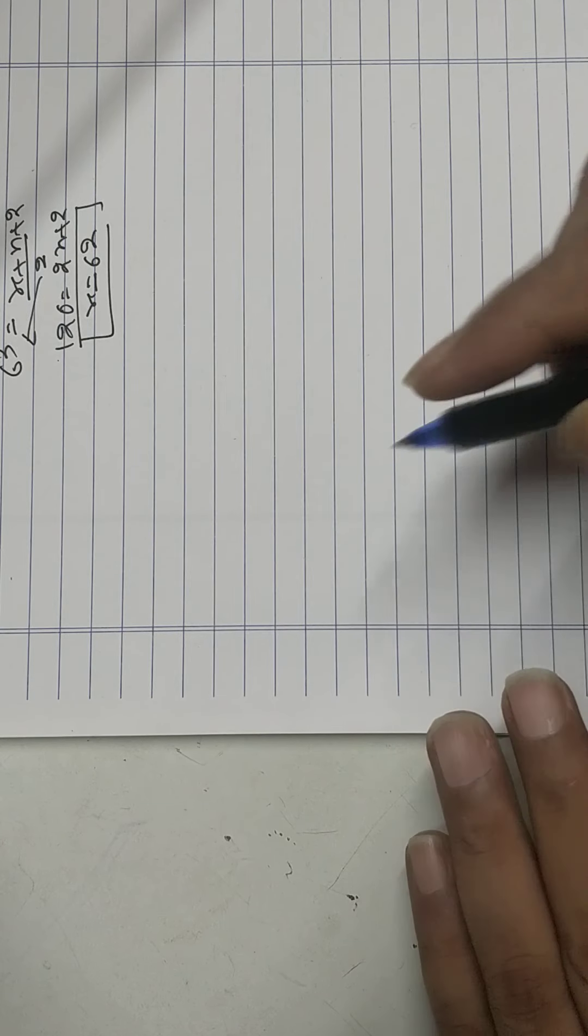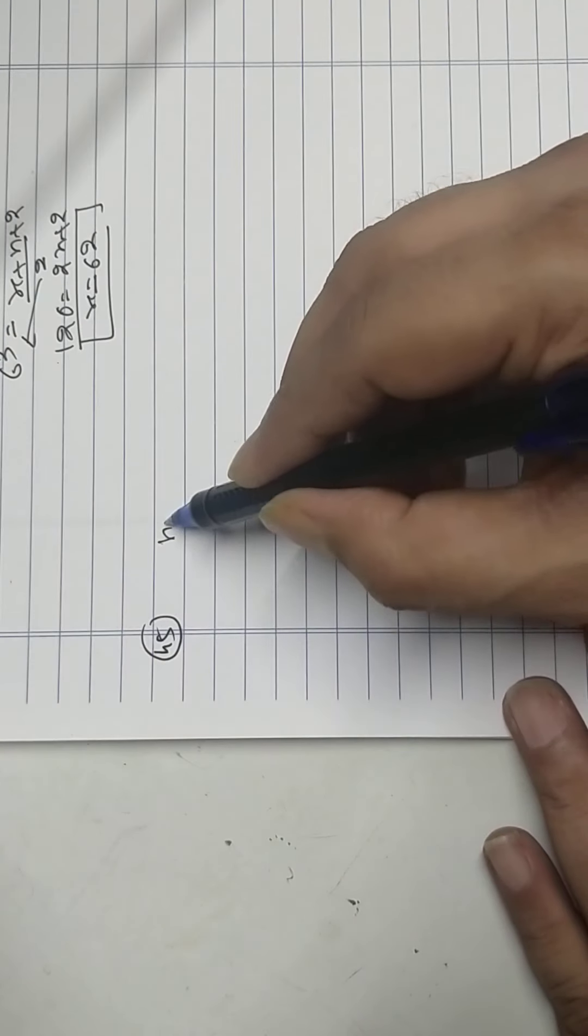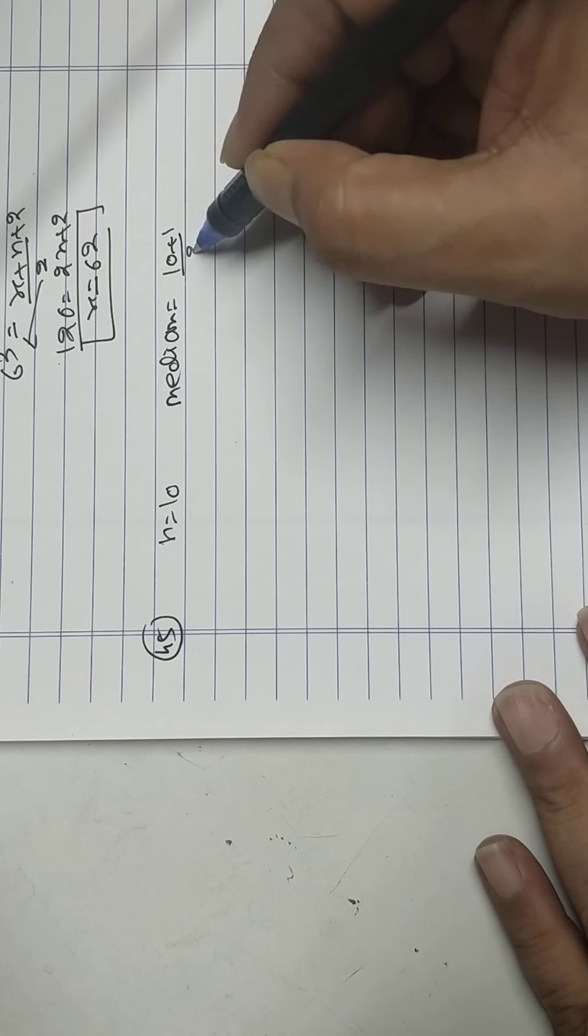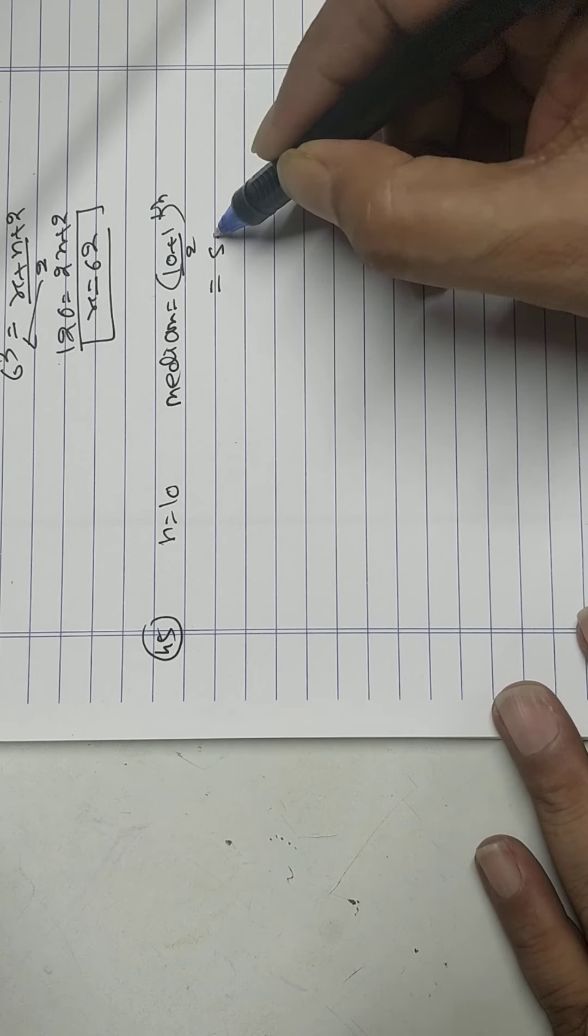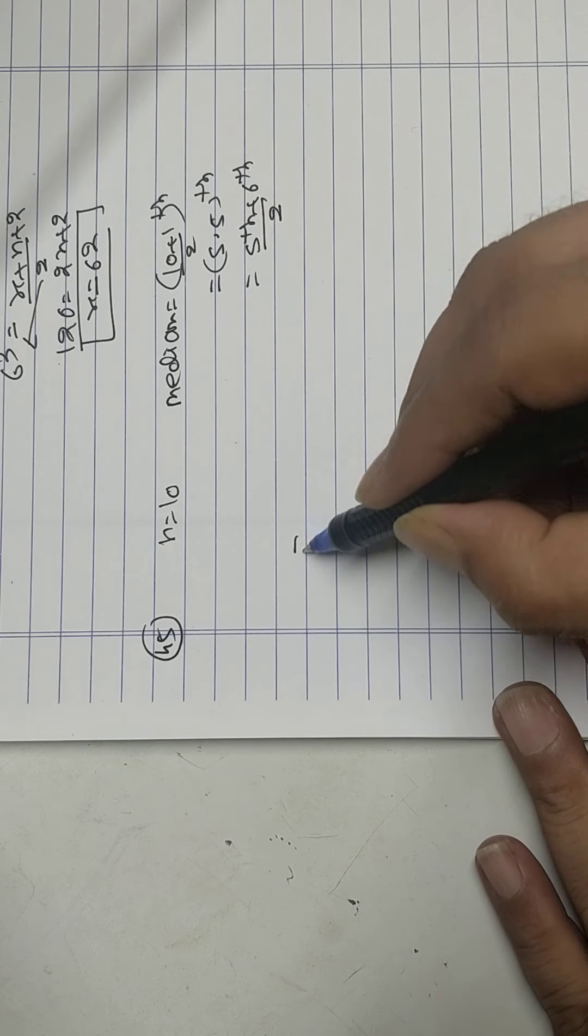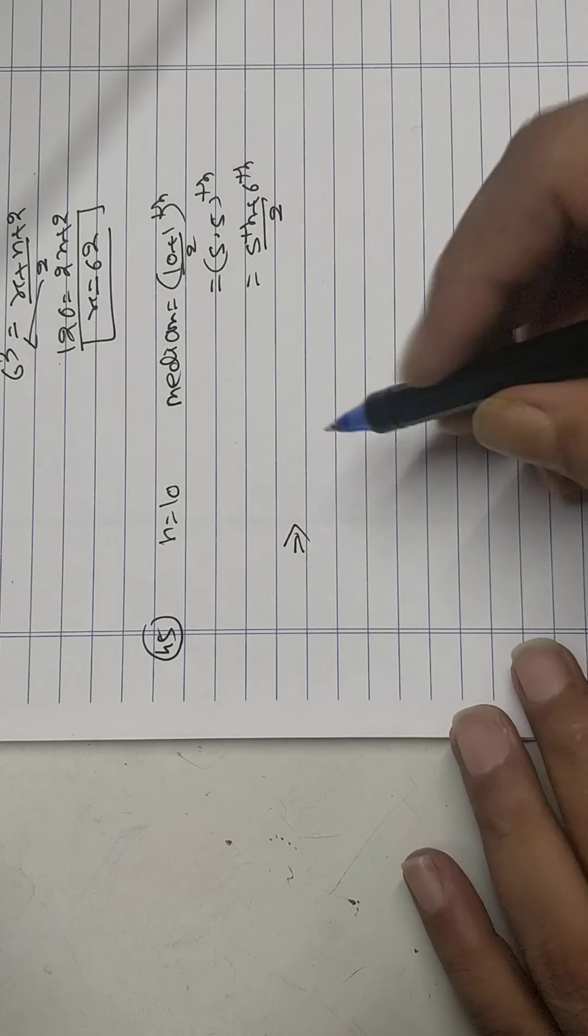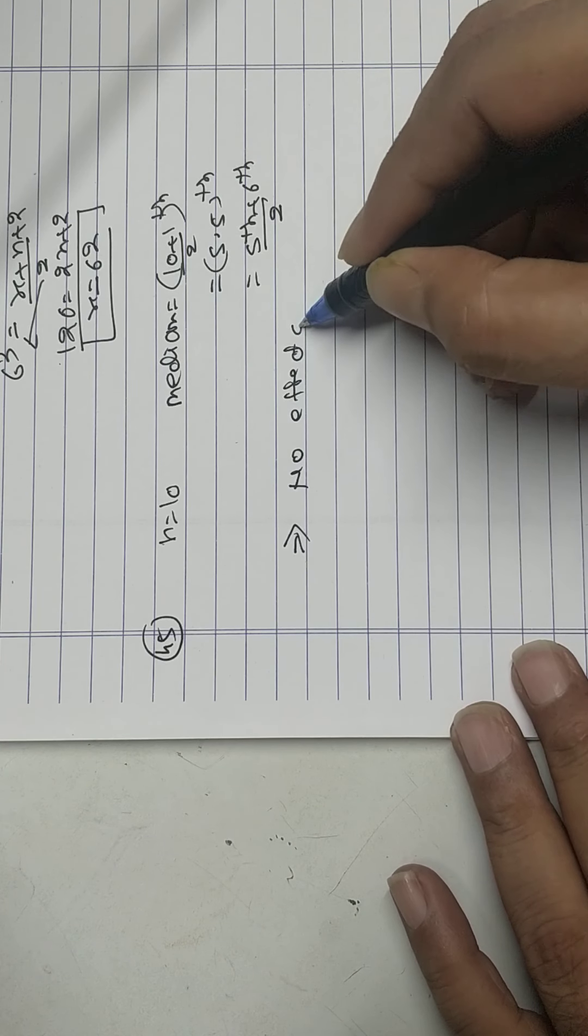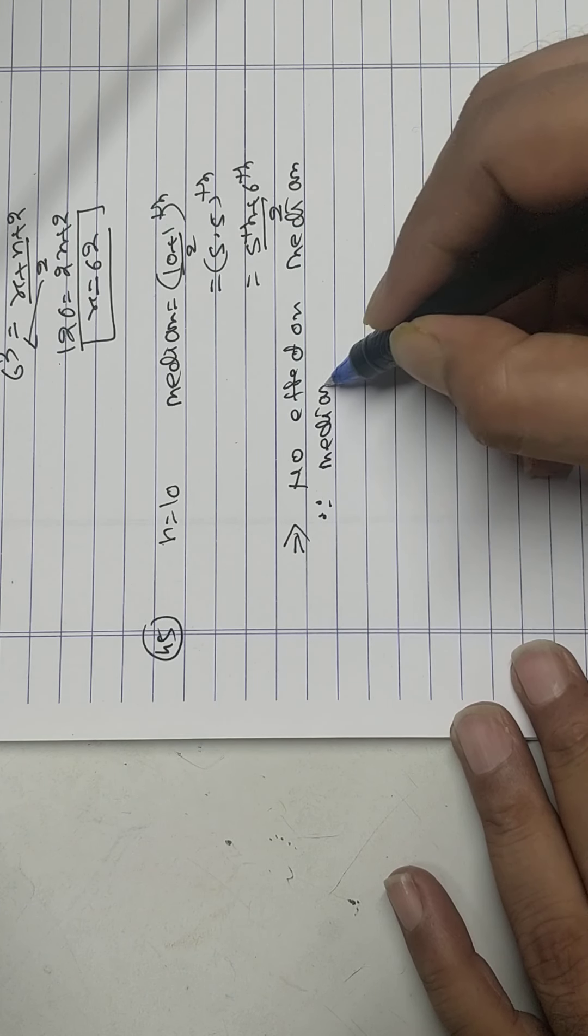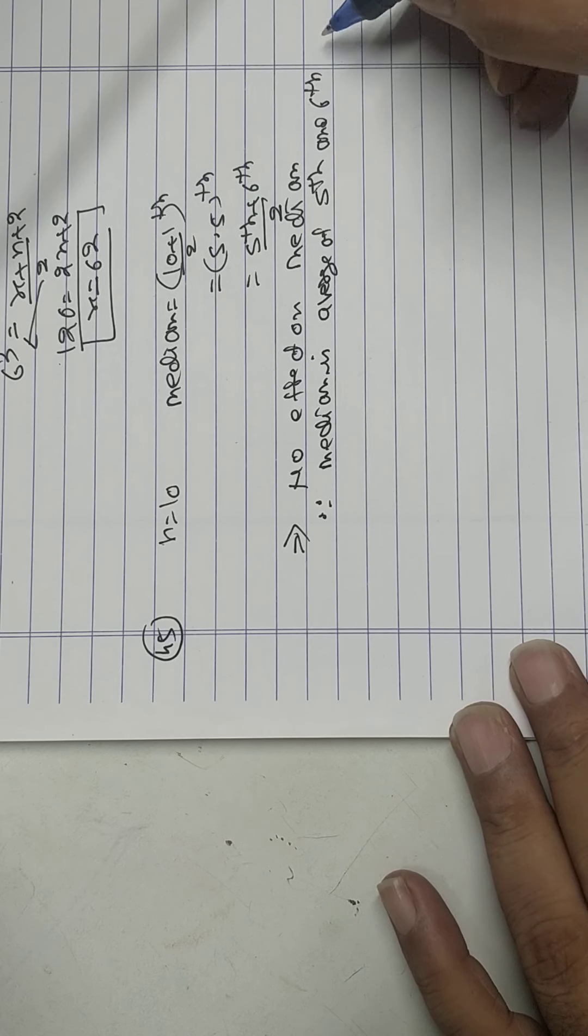Problem 45: There are 10 numbers, so median will be 10 plus 1 upon 2, 5.5, average of 5th and 6th. If the 7th number increases by 8, no effect on median since median is average of 5th and 6th number.